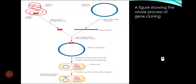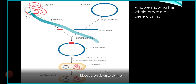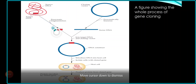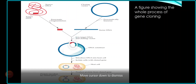Here is a figure showing how gene cloning is done. On the top left, there is the source DNA which is cleaved with a restriction enzyme — when we cleave it, we get our target DNA. This target DNA is inserted into a cloning vector, which is a plasmid also treated with the same restriction enzyme. This makes a DNA construct, which is then introduced into a host cell — typically a bacterial cell.